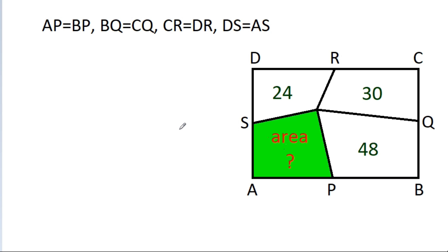In this video, we have given a rectangle ABCD where AP equals BP, BQ equals CQ, CR equals DR, and DS equals AS. These three areas are given as 48, 30, and 24, and we have to find the area of this green part.